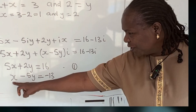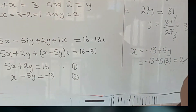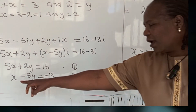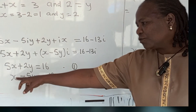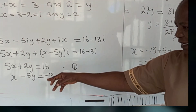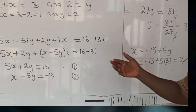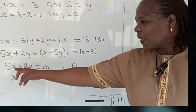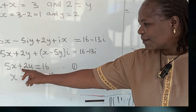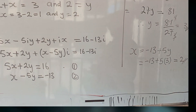With x equal to 2: 2 minus 15 gives minus 13 — that checks out for the imaginary part. For the real part, 10 plus 6 is 16. So you are in order.